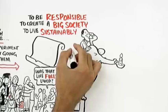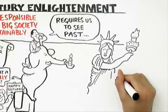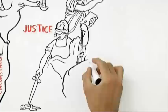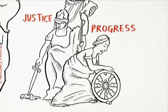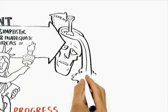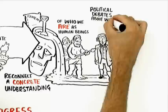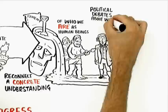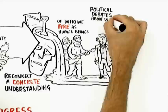To be responsible, to create a big society, to live sustainably, this is not simply a matter of will. The 21st century Enlightenment calls for us to see past simplistic and inadequate ideas of freedom, of justice, and of progress. Perhaps it's time to stop chasing those myths, to stop being transfixed by abstractions, and instead to reconnect a concrete understanding of who we are as human beings to political debates about who we need to be, and philosophical and even spiritual exploration of who we might aspire to be.